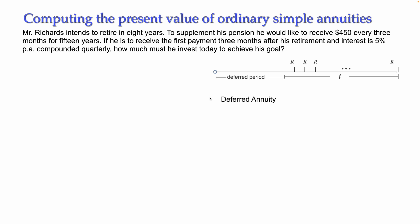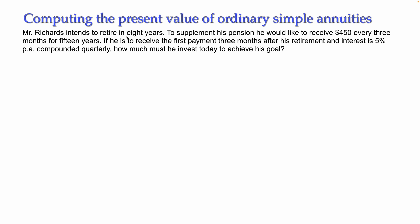The first problem I am going to solve is the following. Mr. Richards intends to retire in eight years. To supplement his pension he would like to receive $450 every three months for 15 years. He is to receive the first payment three months after his retirement. So he is going to retire and start receiving payments eight years from now.